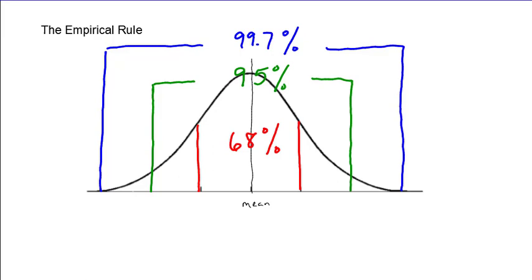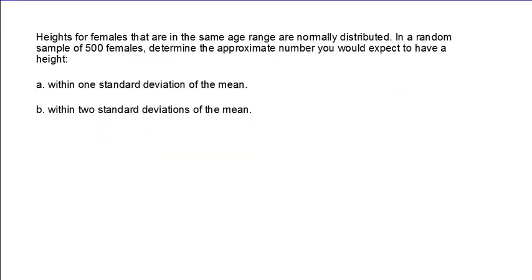So here's a quick application of that. Heights for females that are in the same age range are normally distributed. In a random sample of 500 females, determine the approximate number you would expect to have a height, and the first thing we're going to do is within one standard deviation of the mean.